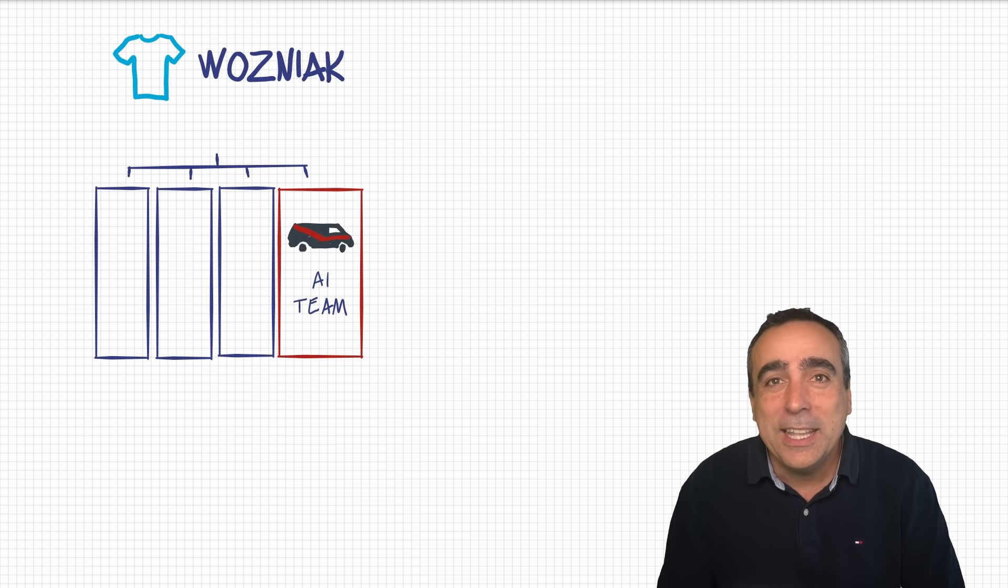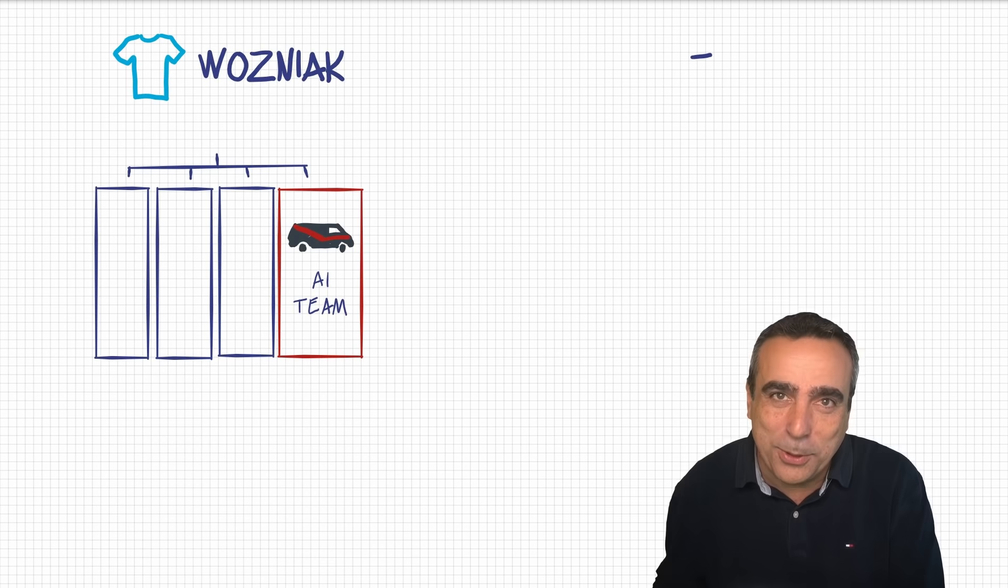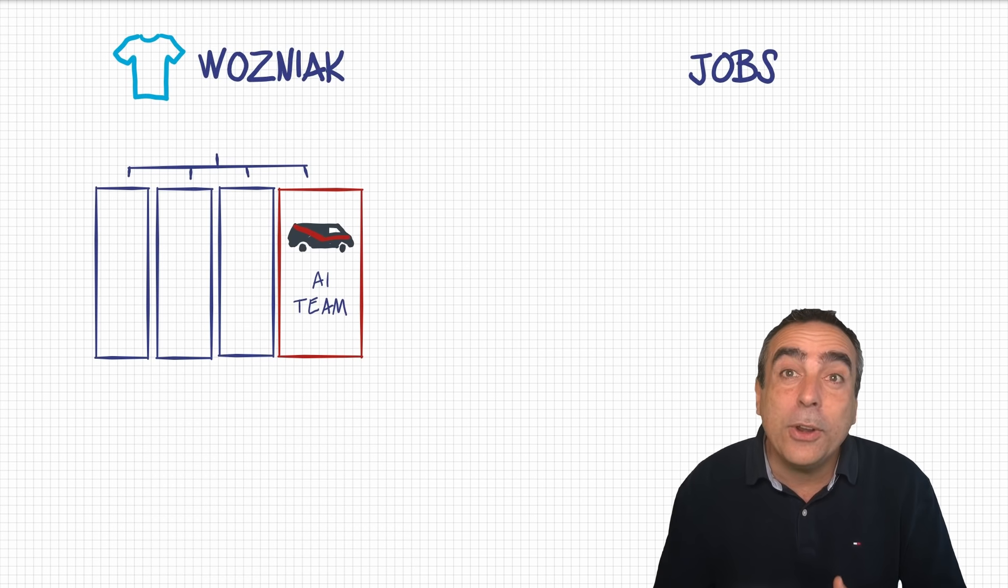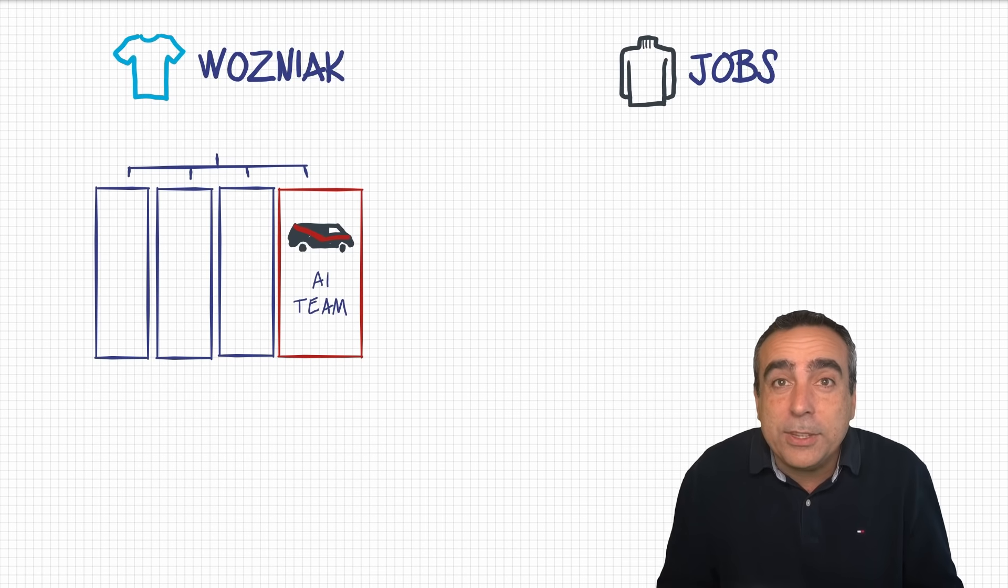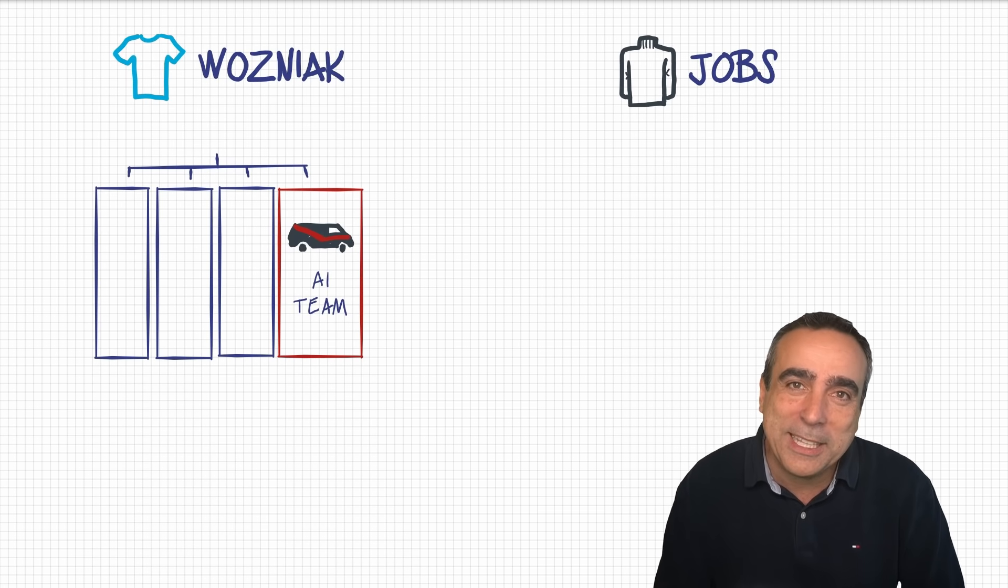Then you have the Jobs approach. Jobs was like the creative business mind behind Apple. And in his case, he would think about the experience first, about the business first, and then he would find the technology to make it happen.